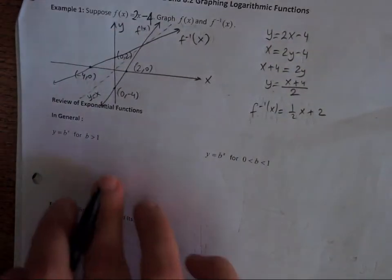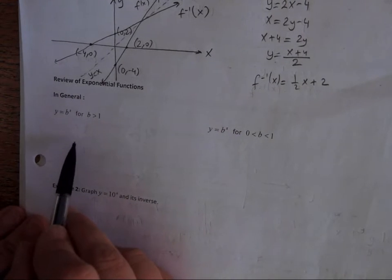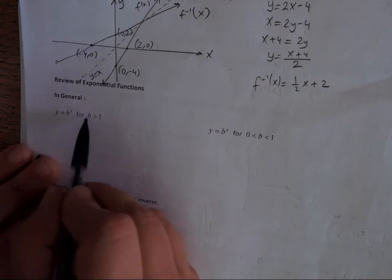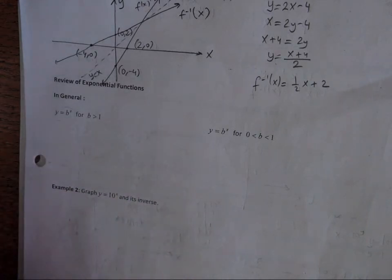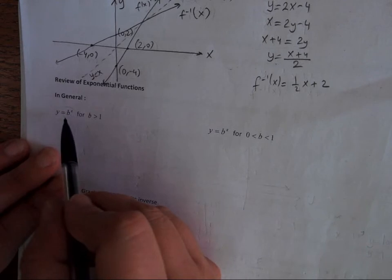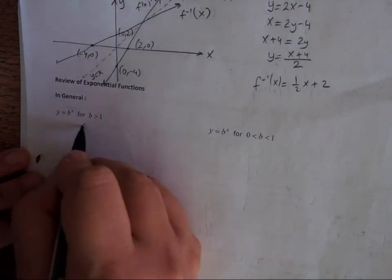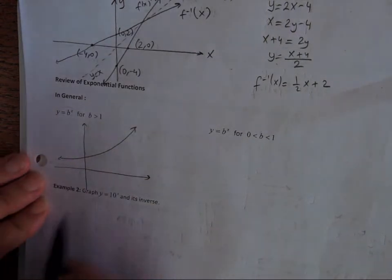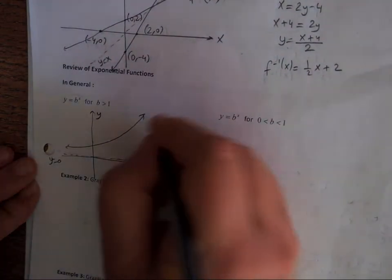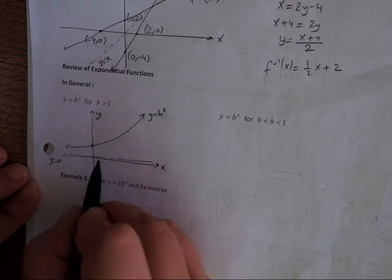We reviewed this because logarithmic functions are inverses of exponential functions. Exponential functions look like y = b^x where b is always a positive number. If b is greater than 1 — like 2^x, 5^x, or 10^x — those are exponential growth functions. They have a horizontal asymptote at y = 0, and the y-intercept is 1 since any number raised to the power of 0 is 1.